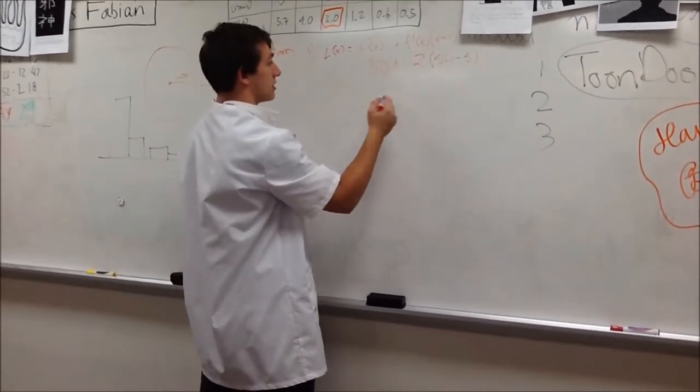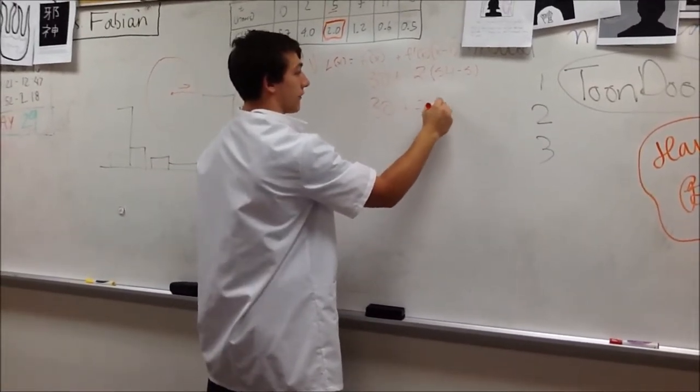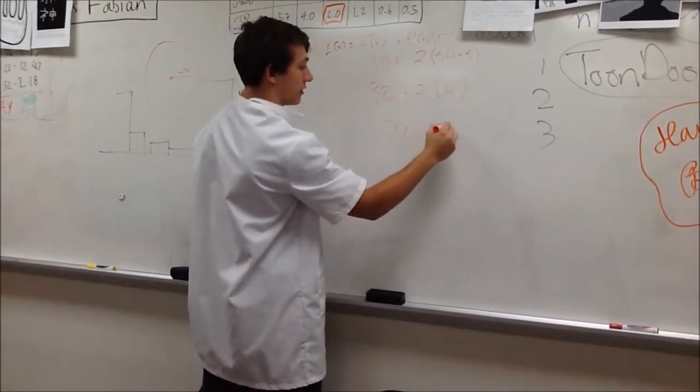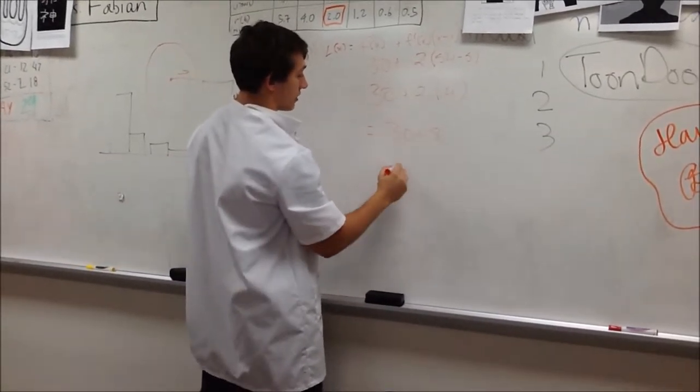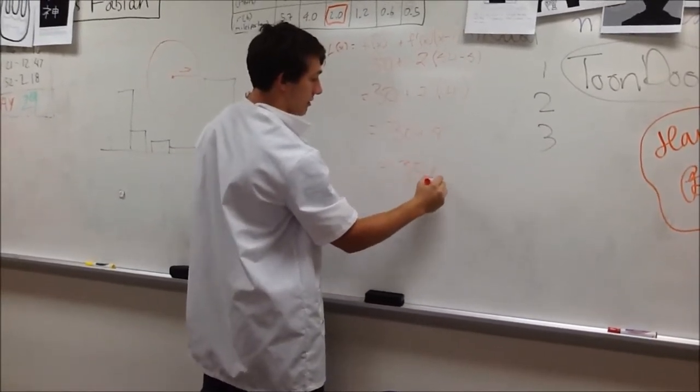So we simplify this out. We get 30 plus 2 times 0.4. We get 30 plus 0.8, which ends up being 30.8 miles.